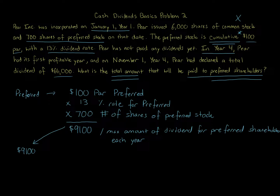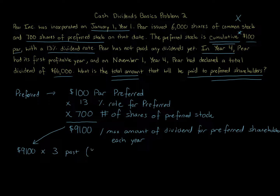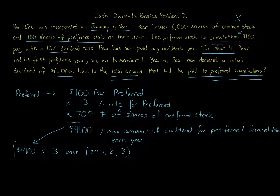This spans from year one through year four — January 1st year one, year two, year three, to year four in November. Technically, it's three past years — years one, two, and three — that are in arrears. Those are the amounts that could have been paid at the maximum in the past. When preferred stock is cumulative, you have to take arrears into account. If some amount was paid in the past but didn't hit the max, you take the difference between what was paid and what should have been paid, and then add the current year.